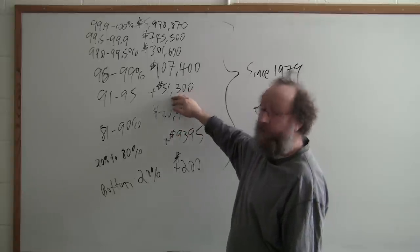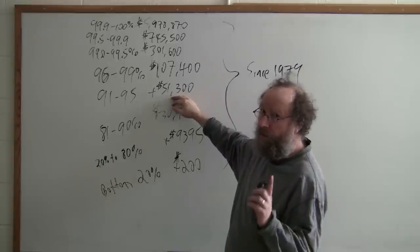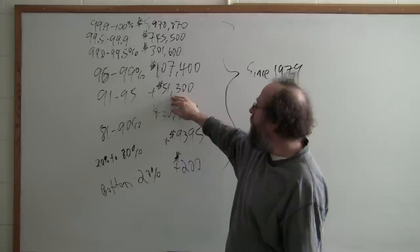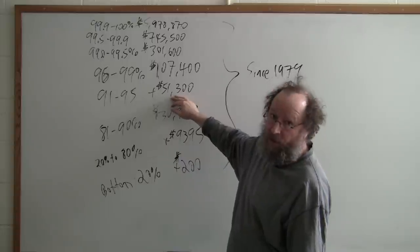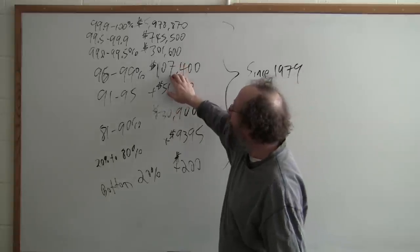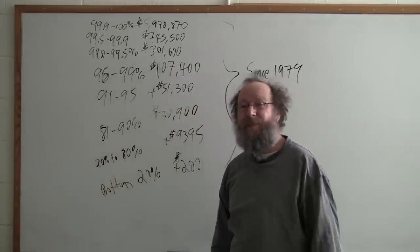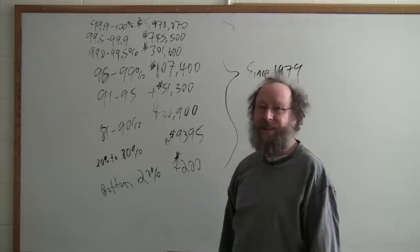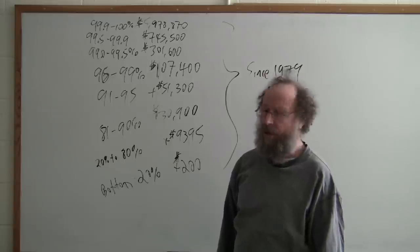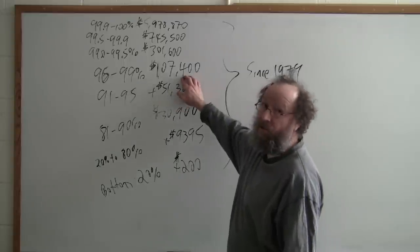The next 5%, and here we're into the top 30 million Americans. The next 5% gained $51,300. The next 4%, and here we're talking about 12 million Americans living among the richest households in the country, gained $107,400.